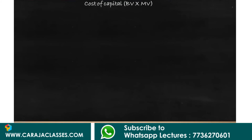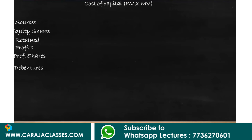Now we have the cost of all sources of finance. We list the sources: equity, retained profits, preference shares, and debentures. For book value weights, the values are: equity 120 lakh, retained profits 30 lakh, preference shares 9 lakh, and debentures 36 lakh, giving a total of 195 lakh.